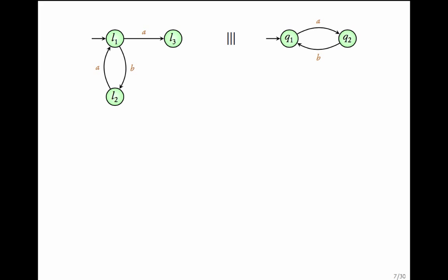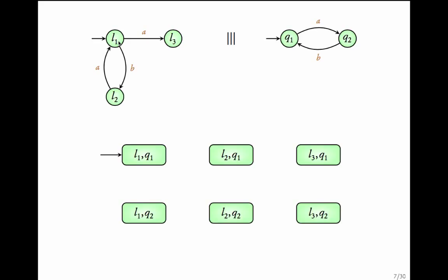Let me give another example. Consider two transition systems. Let us now try to build the transition system which is the interleaving of these two. First, what are the states of the interleaved transition system? They will be L1Q1, L1Q2, L2Q1, L2Q2, L3Q1, L3Q2. The state L1Q1 represents the fact that transition system 1 is in state L1 and transition system 2 is in state Q1.